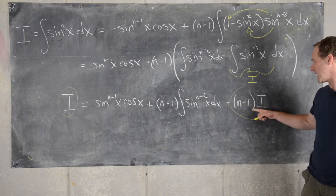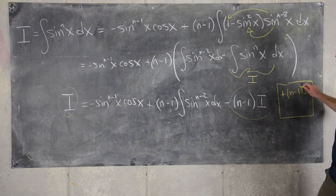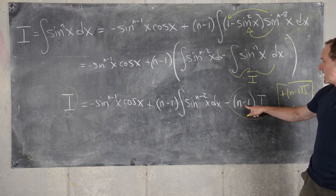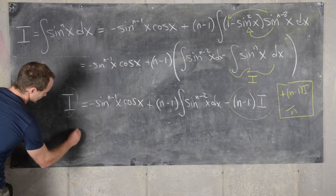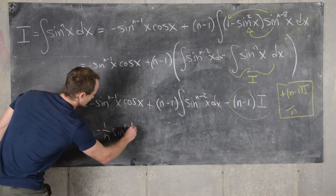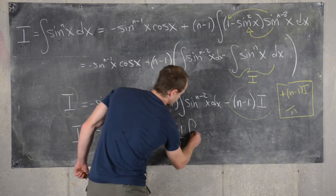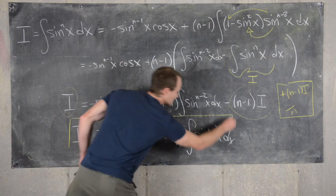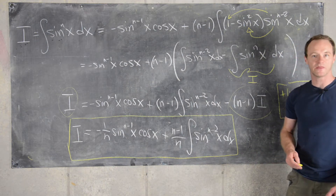We add n minus 1 copies of i to both sides. Adding n minus 1 times i to 1 times i gives n times i on the left. Dividing both sides by n yields the final power-reducing formula: i equals minus 1 over n times sine to the n minus 1 of x times cosine of x, plus n minus 1 over n times the integral of sine to the n minus 2 of x dx. That is our power-reducing formula for the integral of sine to the nth power of x.